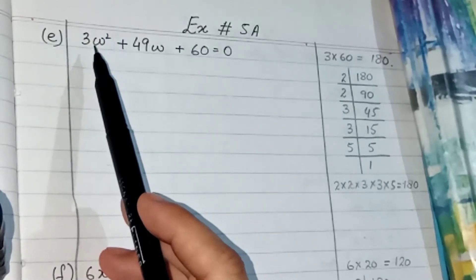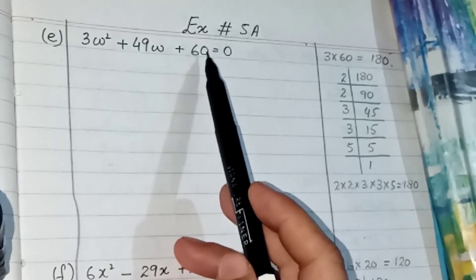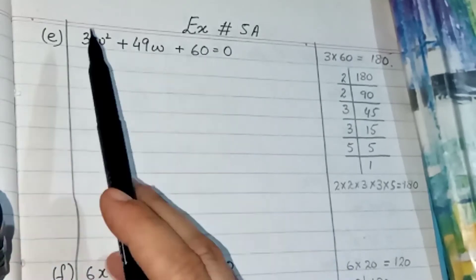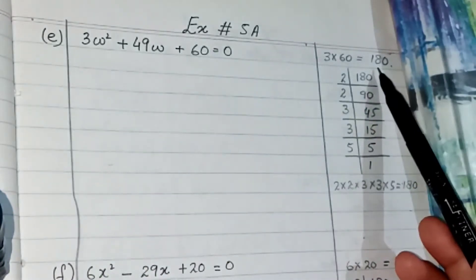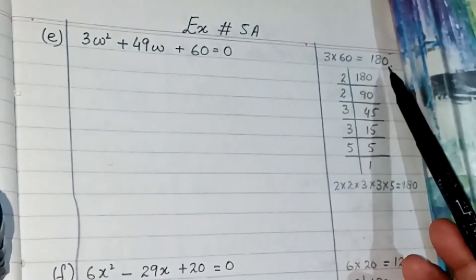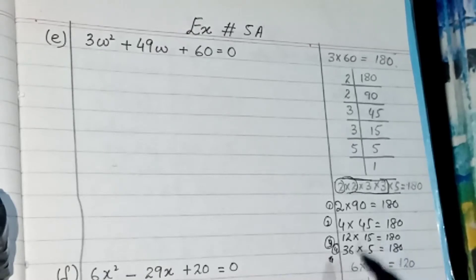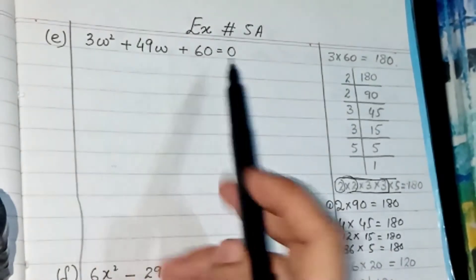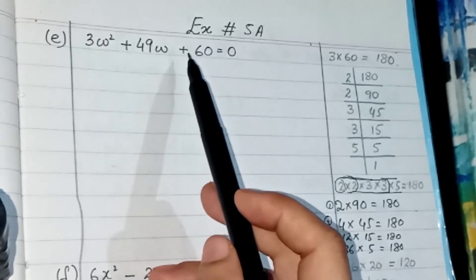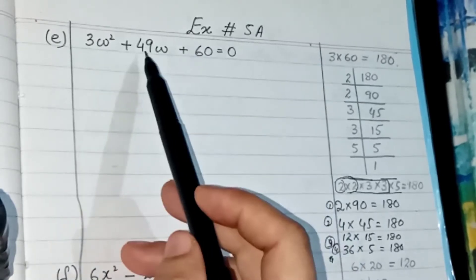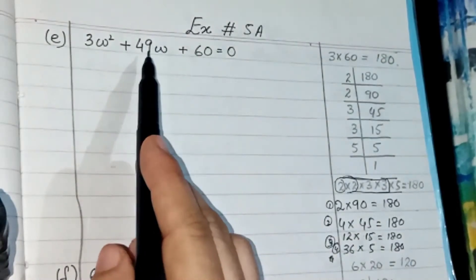But here in part E we have 3 as the coefficient of the first term and 60 as the last term. When we multiply 3 with 60 we get 180, and we will find the factors of 180. The sign of the last term gives a hint of addition, so we have to add the factor pairs to get the middle term.